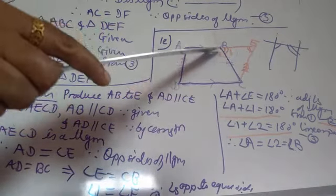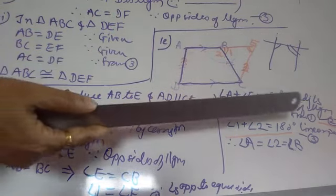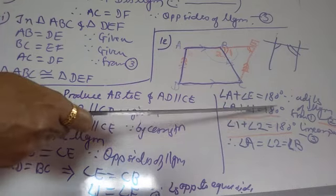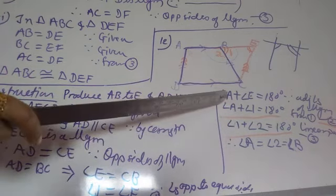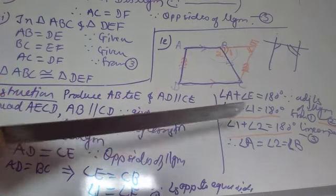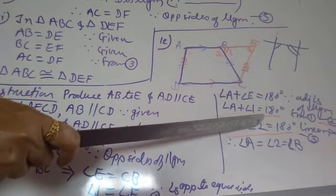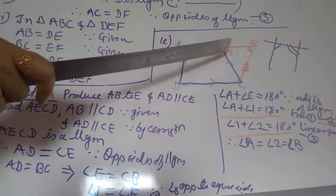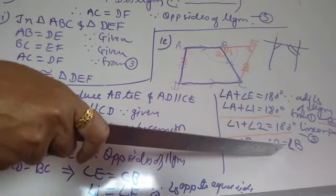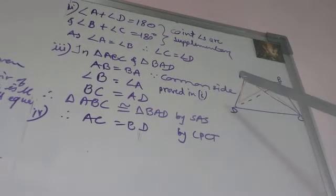At point B, angle 1 and angle 2 form a linear pair, so angle 1 plus angle 2 equals 180 degrees. Comparing both equations, since the right-hand sides are equal and angle 1 is common, angle A equals angle 2, which is angle B of the trapezium. So we have shown angle A equals angle B.